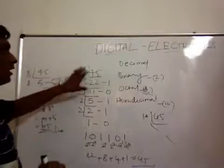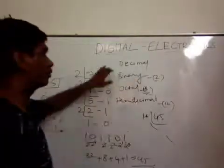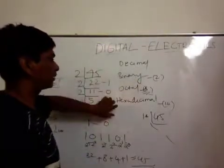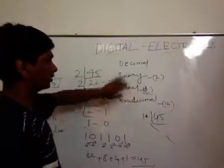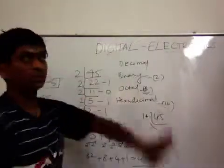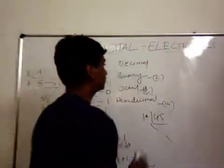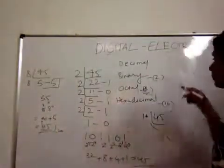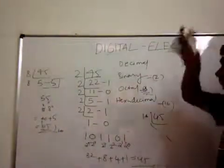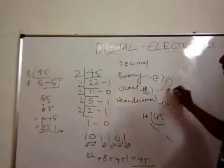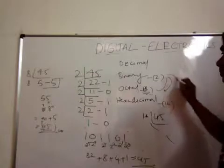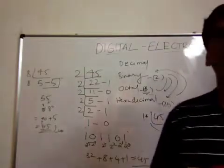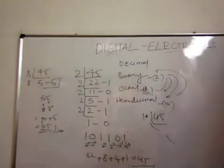So in this video we have learned how to convert decimal to binary, decimal to octal, and binary to decimal and octal to decimal. There are other conversions like octal to binary, binary to octal, binary to hexadecimal, and hexadecimal to binary, which I will discuss in another class.